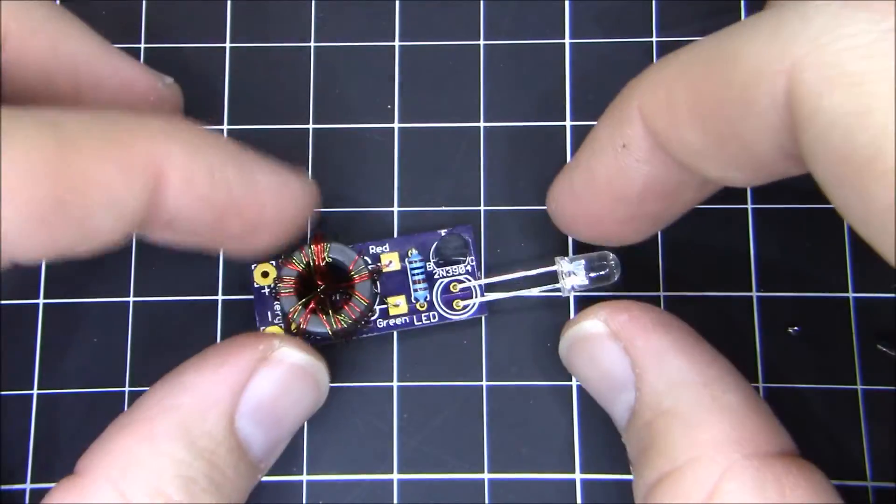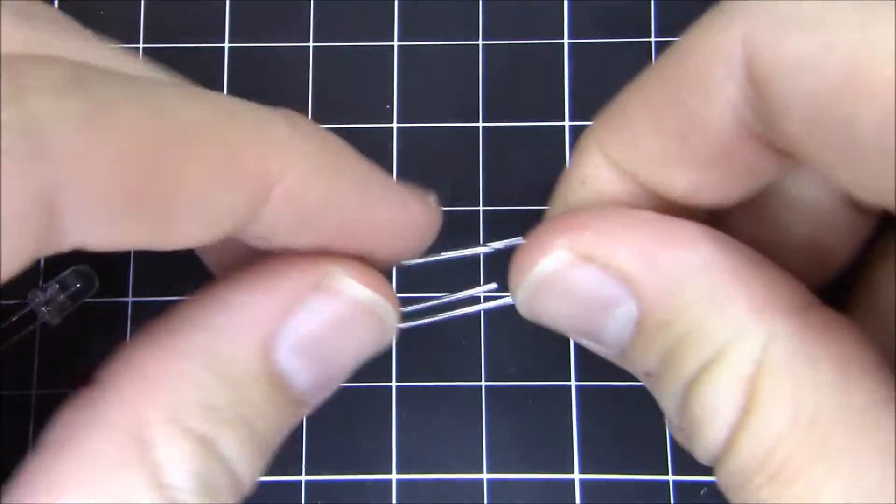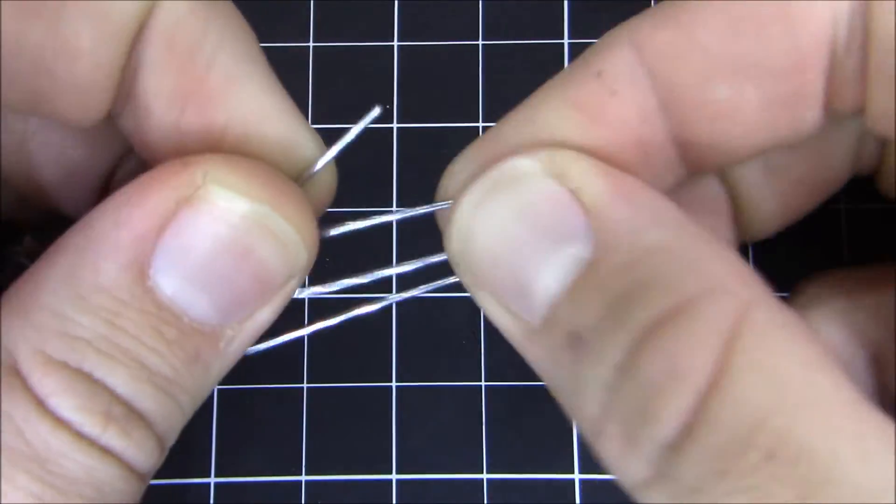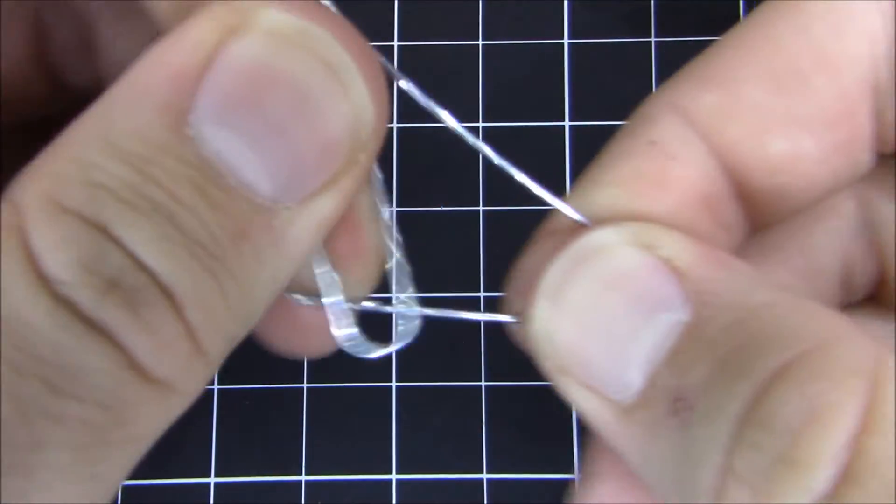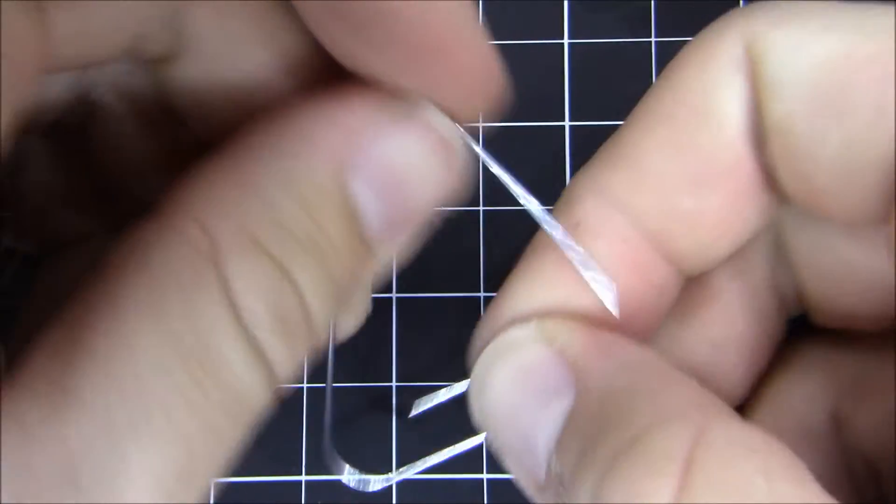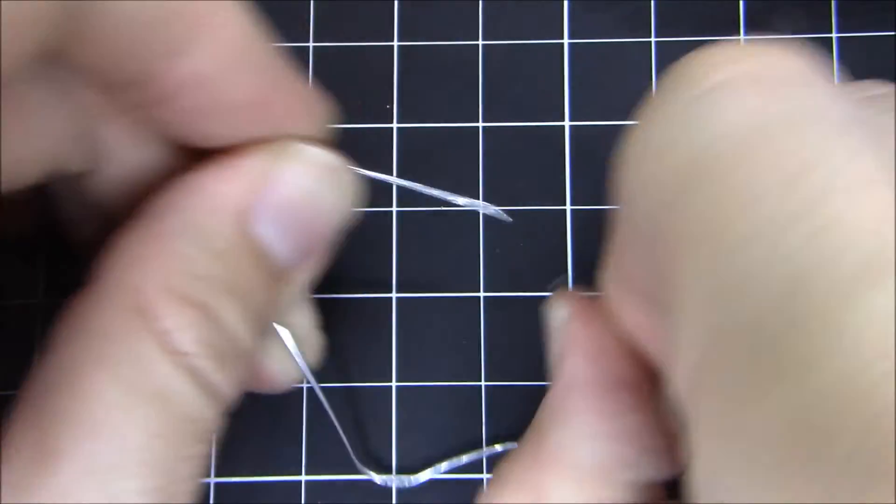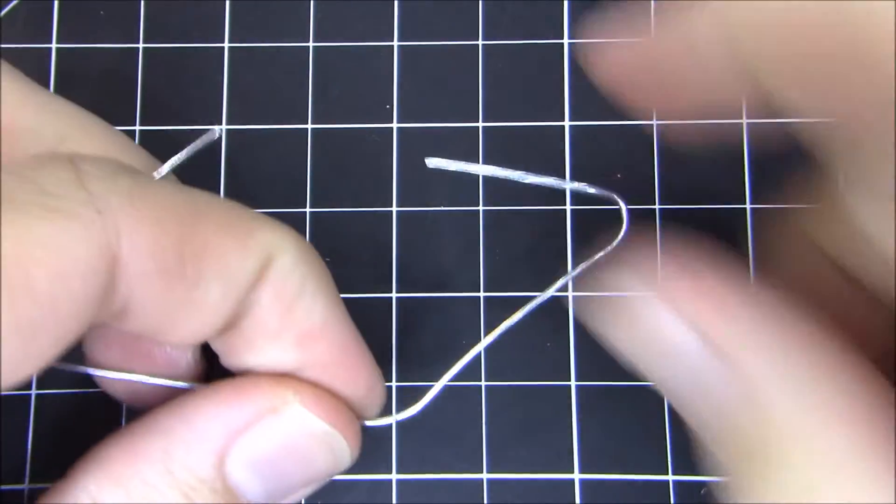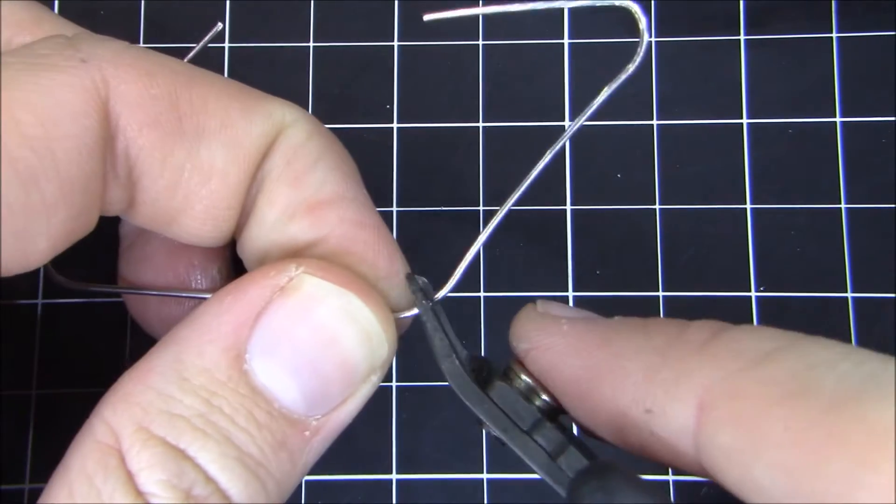Alright, so now it's time for the paper clip. You need to unbend the paper clip like I am showing here. Just kind of unbend it into kind of like a cube almost like that. And then take your wire cutters and cut the paper clip in half right there.